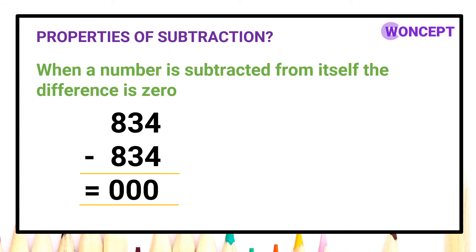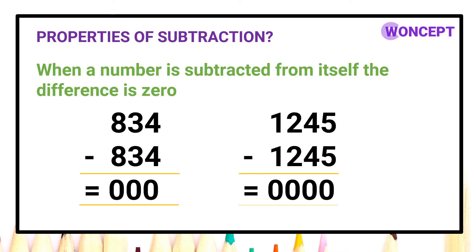Let us have another four-digit example. 1245 minus 1245. What should be the difference? Yes, you are right. The difference is 0 because we have subtracted 5 from 5, 4 from 4, 2 from 2 and 1 from 1. So you can see when a number is subtracted from itself, the difference is 0, whether we have one-digit number, two-digit number, three-digit number or four-digit number.